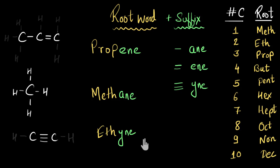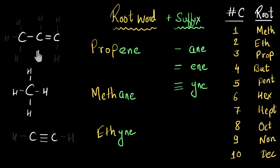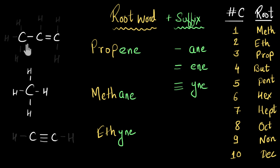So we've seen how to name hydrocarbons: two parts — root word, which denotes the number of carbon atoms, and suffix, which denotes whether it belongs to the alkane, alkene, or alkyne family. Note that here we're only talking about single carbon-chain molecules with no branching. When branching occurs, the root word rules change slightly — we'll cover that in future videos. Also, we're dealing with simple alkenes and alkynes with only one double or triple bond; multiple double bonds change the suffix rules, which we'll also cover later.